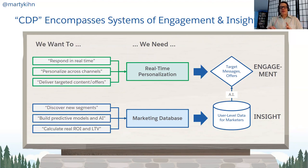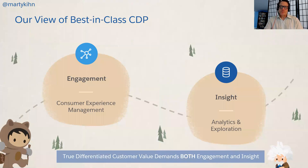A flexible data store where all customer data can sit at the user level, available for really cool AI modeling. These two use cases are different — two levels of CDP. One is much more around real-time, in-the-moment, but it's not a full customer view; it's a partial view. The other is much more around the system of record — data at rest. Best-in-class CDP has both: system of engagement and system of insights. If you want a truly comprehensive CDP, it has to do both — you can't do one or the other.